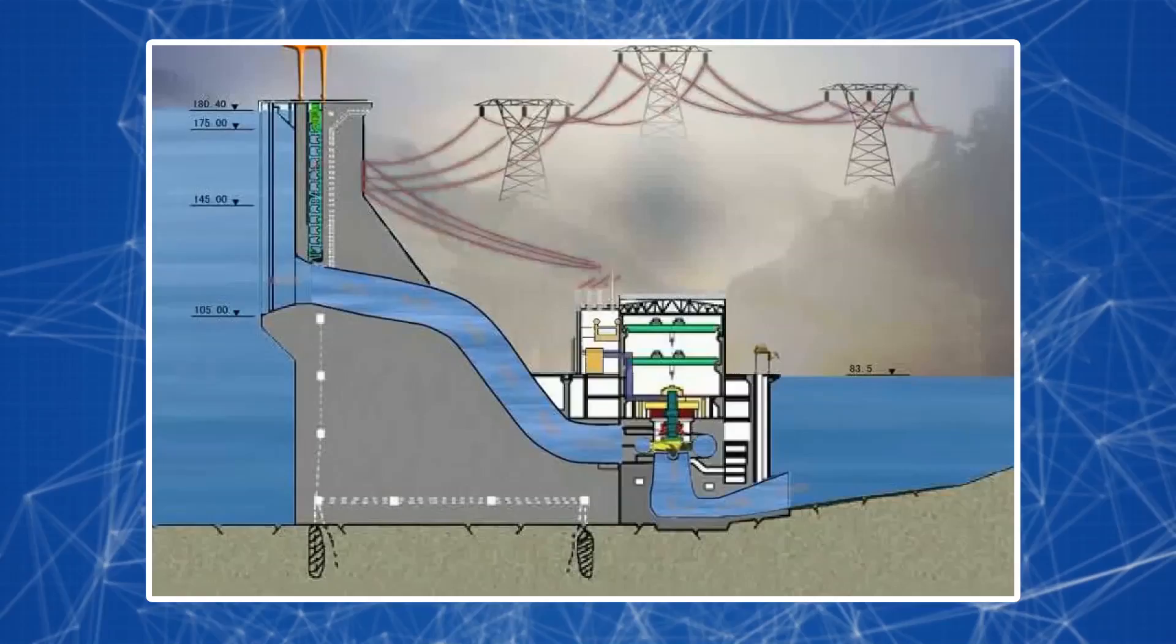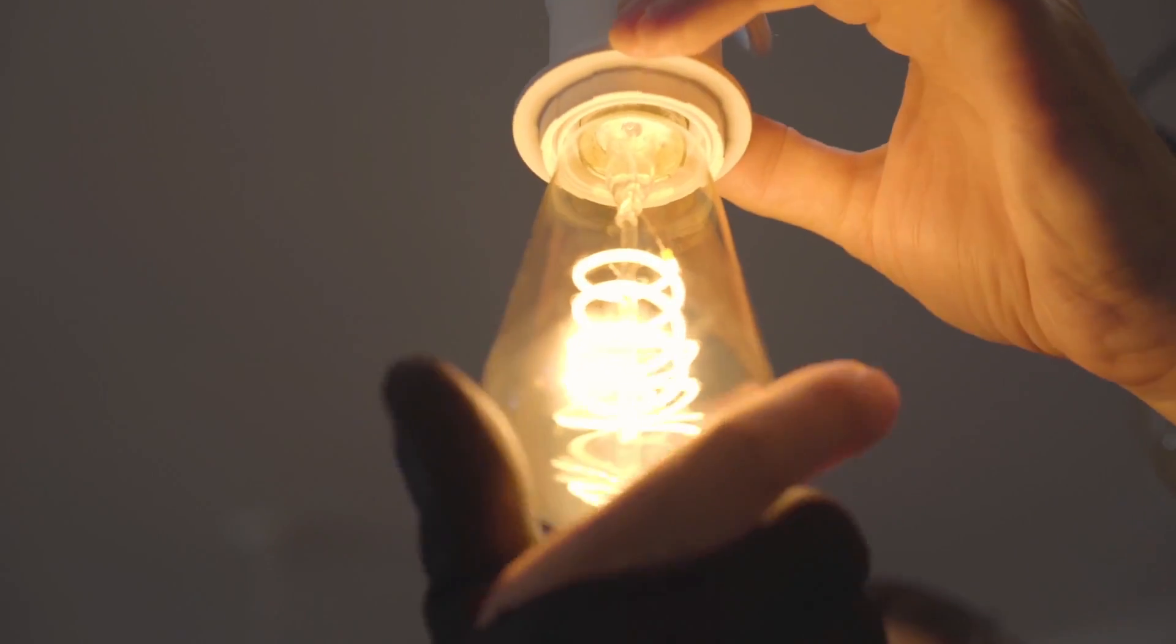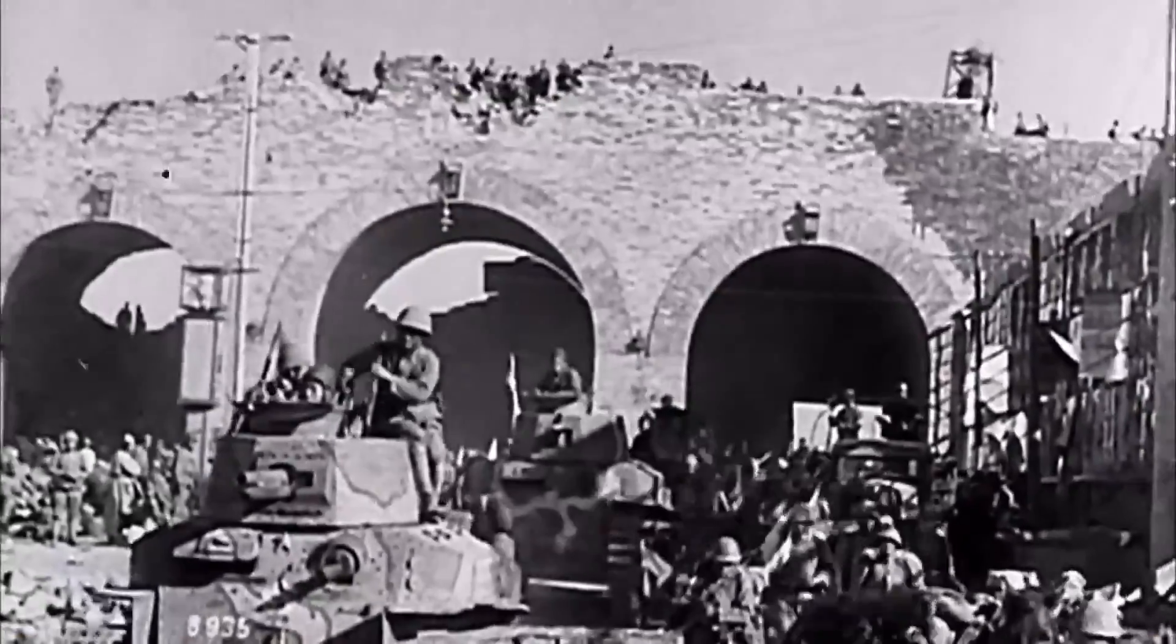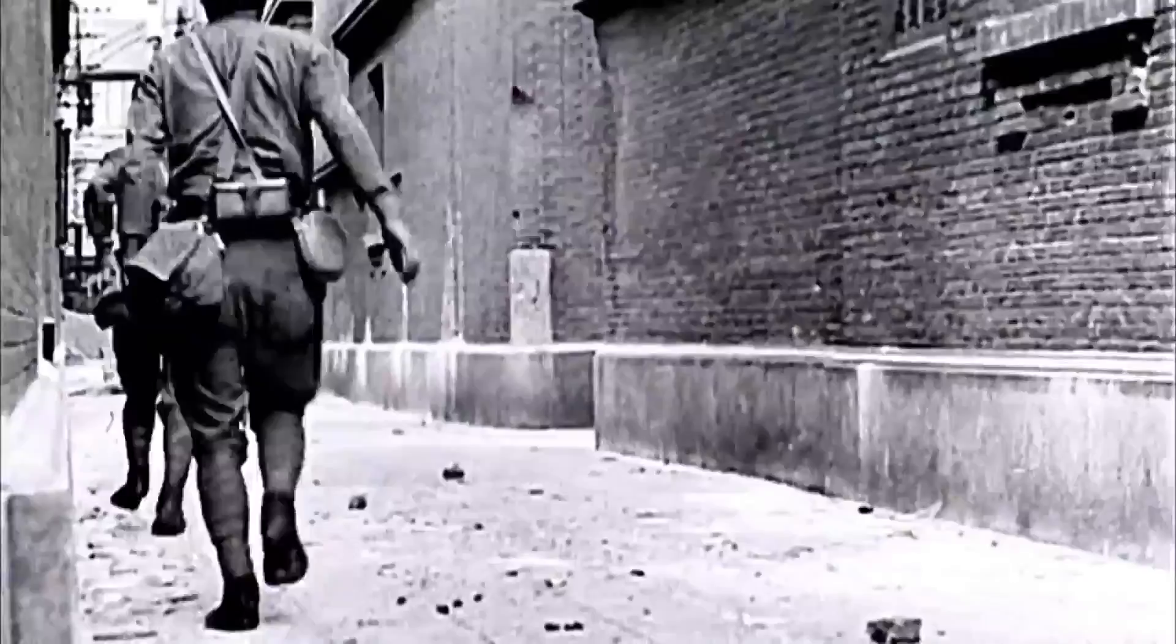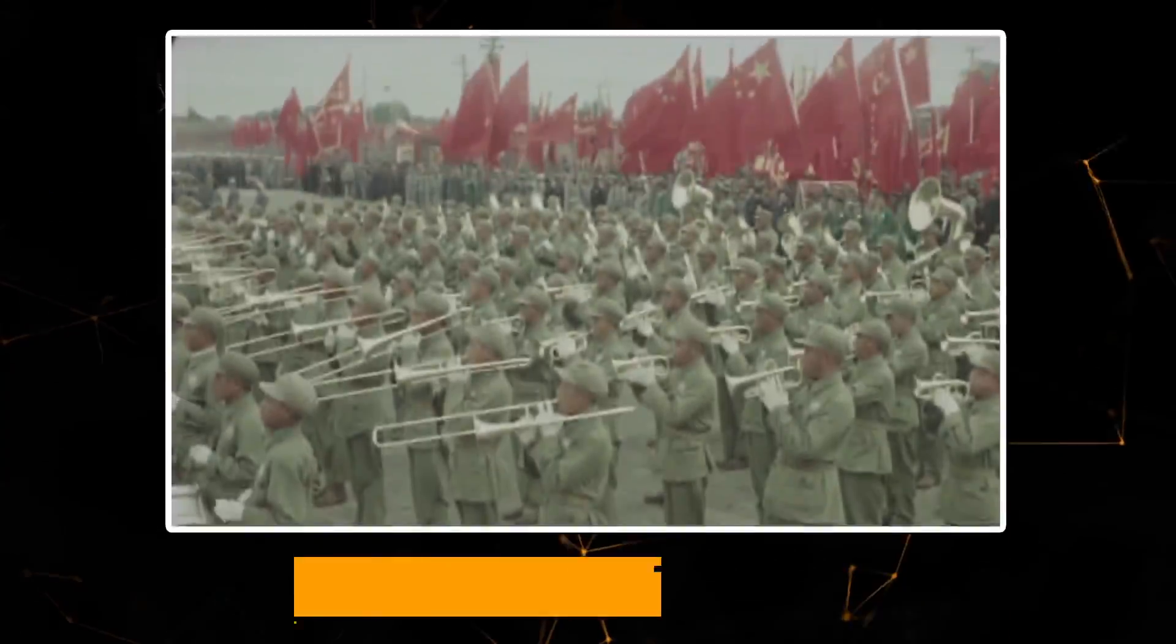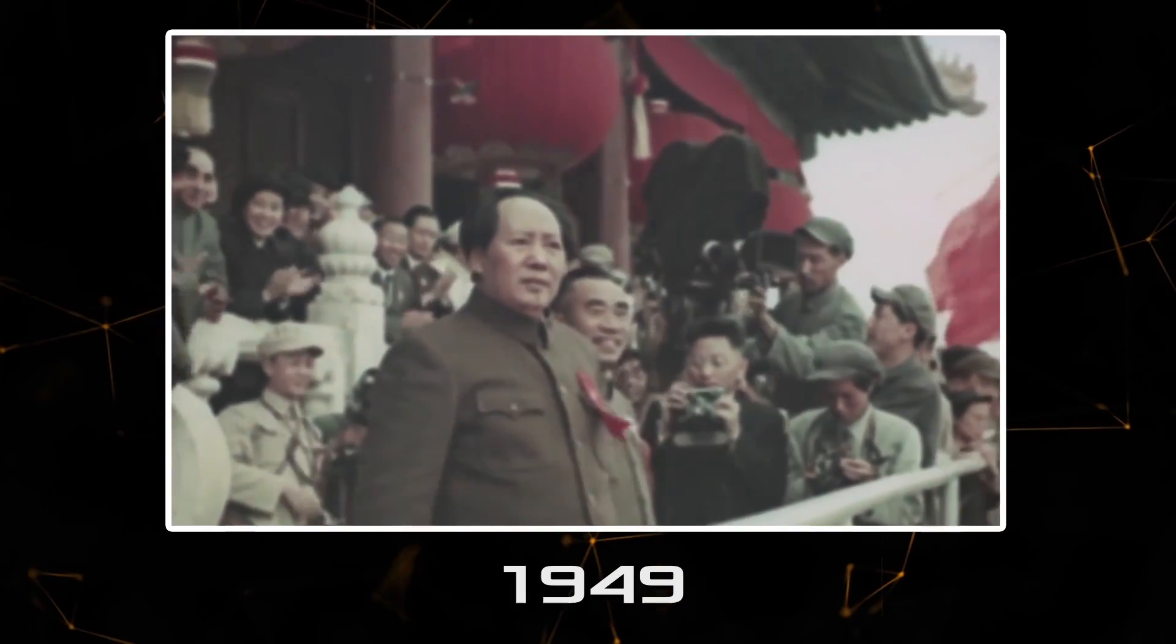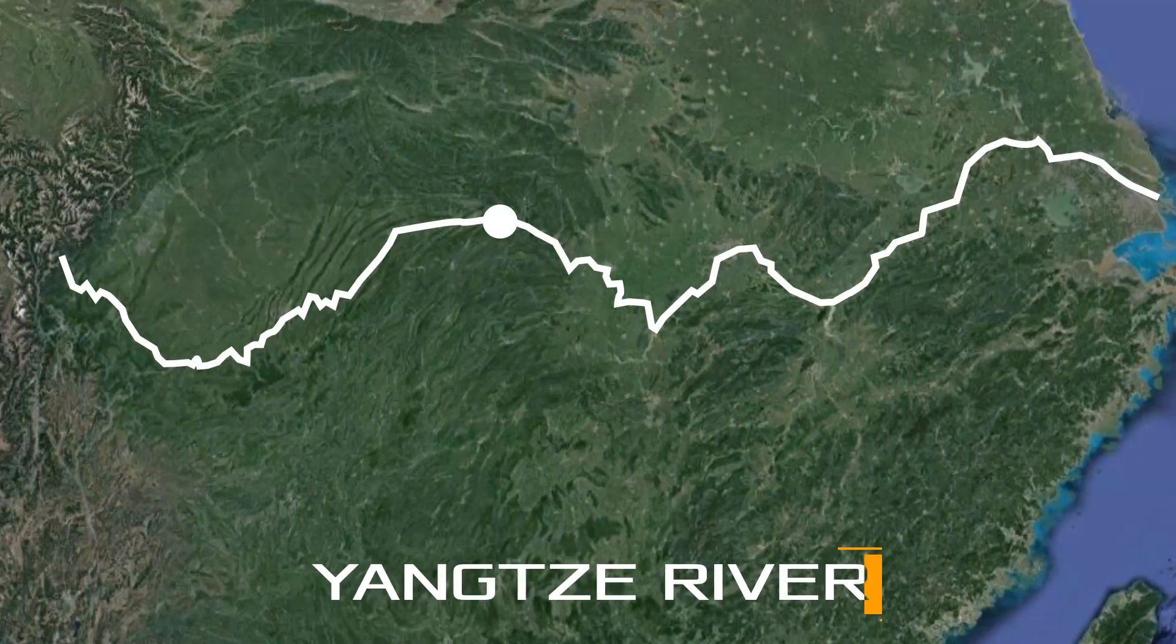To get the maximum benefit from this project, he proposed to build a hydroelectric power station on it. He hoped that this would help solve two big problems at once: supply almost the entire country with electricity and at the same time protect the population from the violence of the water element. However, the outbreak of the civil war, then the Japanese invasion, and finally the Second World War did not allow the project to become a reality. After establishing peace in China in 1949, President Mao Zedong decided to return to the idea.